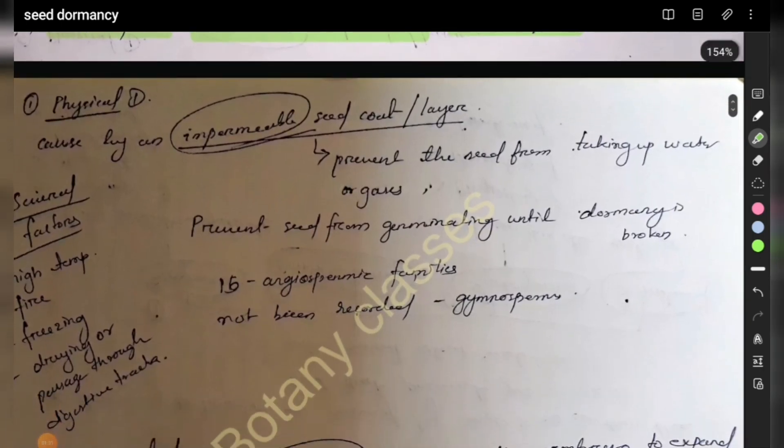Starting from physical dormancy: impermeability. If the seed coat is physically impermeable to water and moisture, seed germination cannot occur.